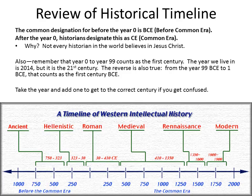Also, remember that the year zero to the year 99 counts as the first century. So the year we live in is 2014, but it is the 21st century. The reverse is also true: from the year 99 BCE to 1 BCE, that is the first century BCE. A very easy way to think of it is take the year and add one to get to the correct century if you get confused.